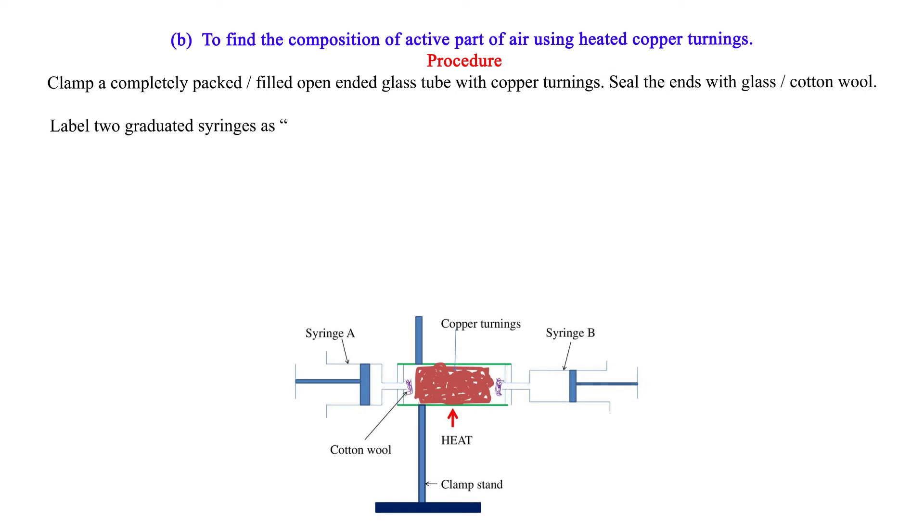Label two graduated syringes as A and B. Push out air from syringe A. Pull in air into syringe B. Attach both syringe A and B on opposite ends of the glass tube.